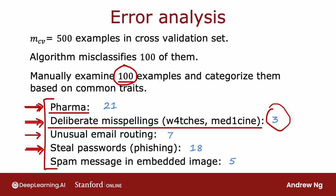In this example, the algorithm misclassifies 100 examples and we look at all 100 manually. But if you had 5,000 cross-validation examples and the algorithm misclassified 1,000 of them, you may not have the time to look at all 1,000. In that case, I will often randomly sample a subset of around 100 to a couple hundred examples — that's the amount you can look through in a reasonable time — and that will give you enough statistics about the most common types of errors.